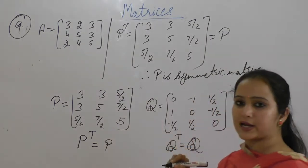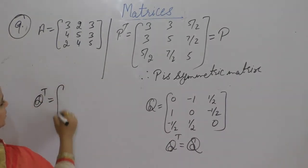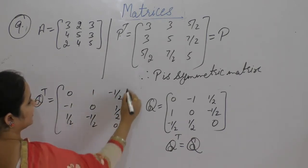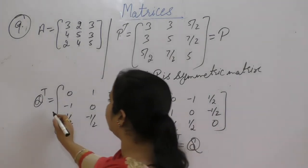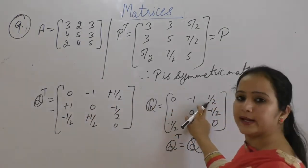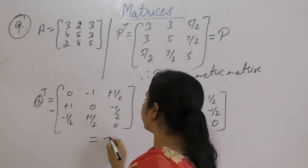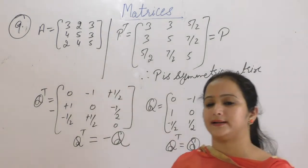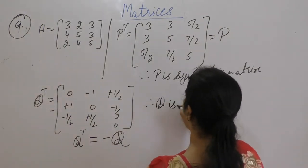Now take Q transpose. Q transpose equals 0, 1, -1/2; -1, 0, 1/2; 1/2, -1/2, 0. Taking the negative sign common, we get negative of the original Q matrix. So Q transpose equals minus Q. Therefore Q is a skew-symmetric matrix.